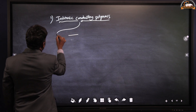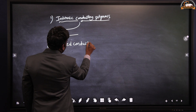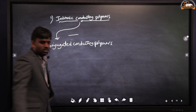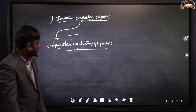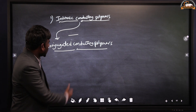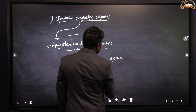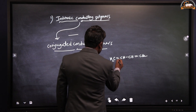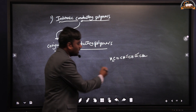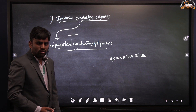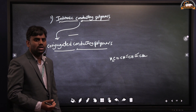The first type of intrinsic conducting polymers is conjugated conducting polymers. What is the meaning of conjugation? Conjugation means a molecule which contains alternating double bonds. For example, 1,3-butadiene: this structure contains a double bond, then a single bond, then a double bond. This type of arrangement — alternating double bonds — is known as conjugation.